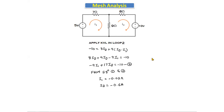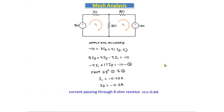Solving equations one and two using a calculator, we get I1 = -0.02 amperes and I2 = -0.6 amperes. The question asks for the current through the 8 ohm resistor. Only I2 flows through the 8 ohm resistor, so the answer is -0.6 amperes.